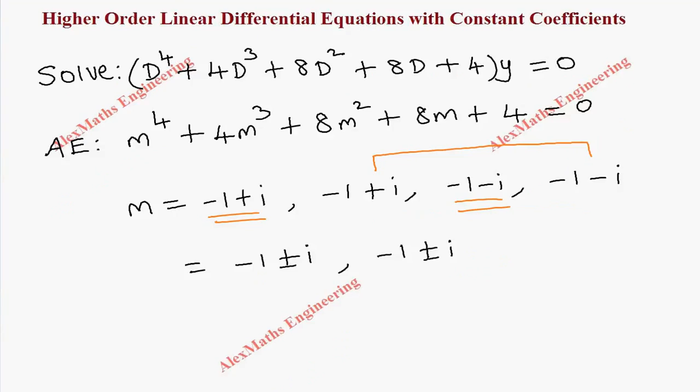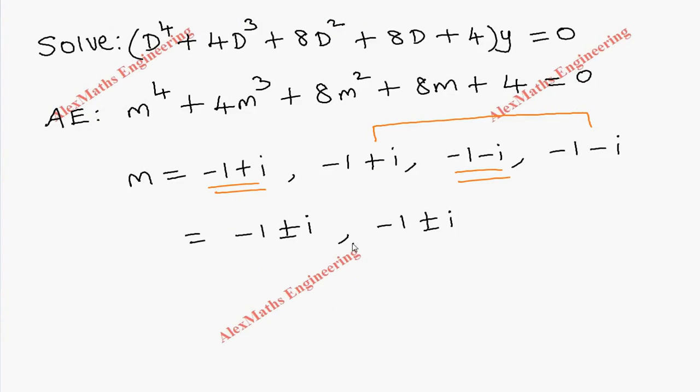So the complex roots repeated twice. As per the procedure, when we write the complementary function, here the alpha value is -1 and beta value is 1.